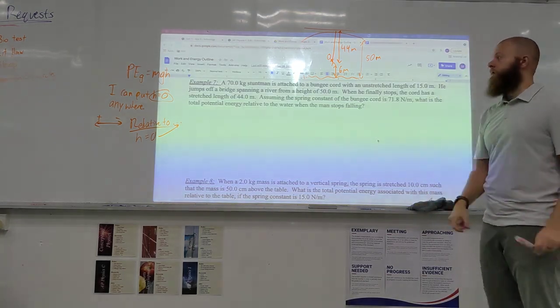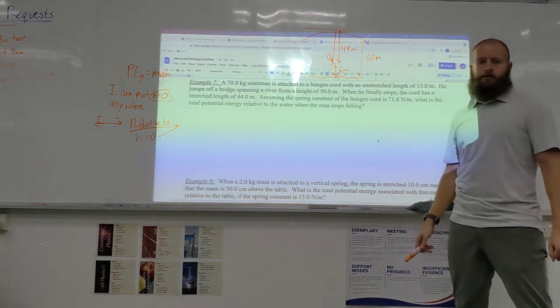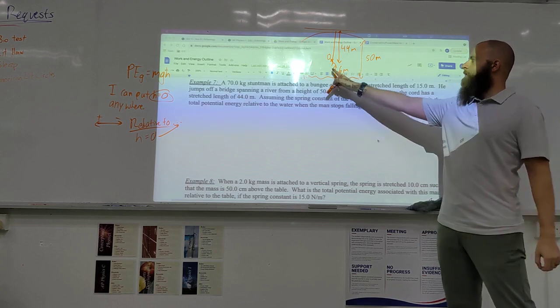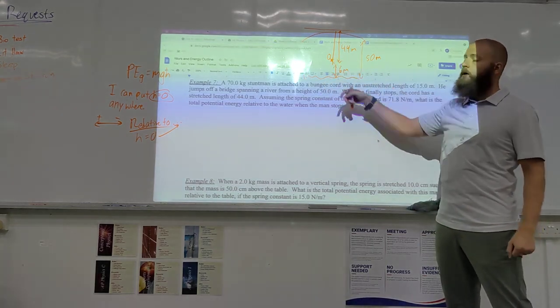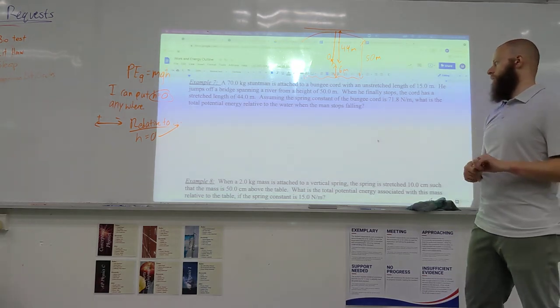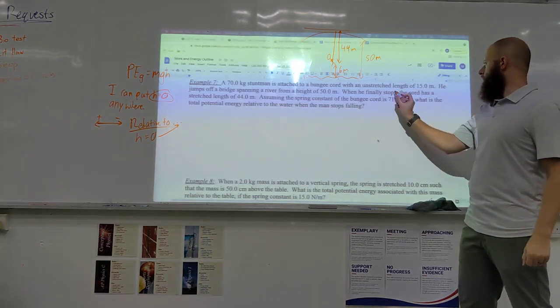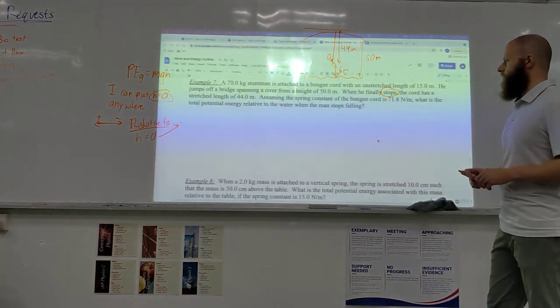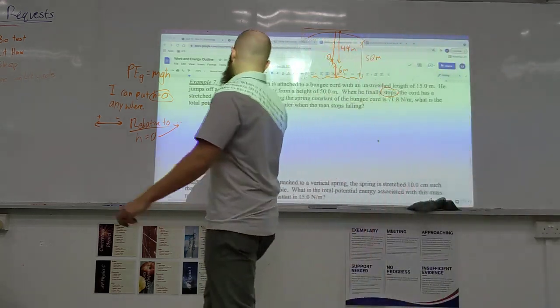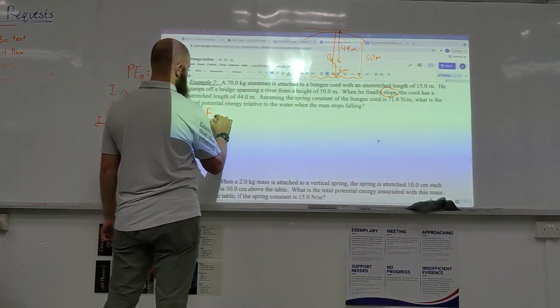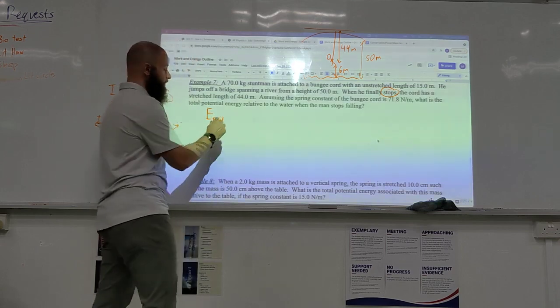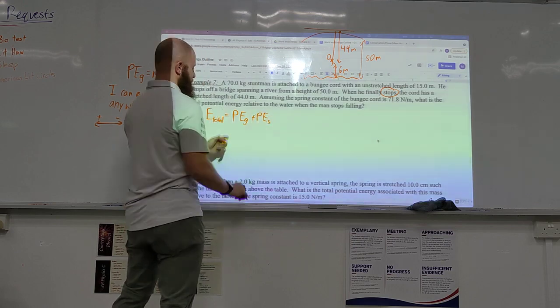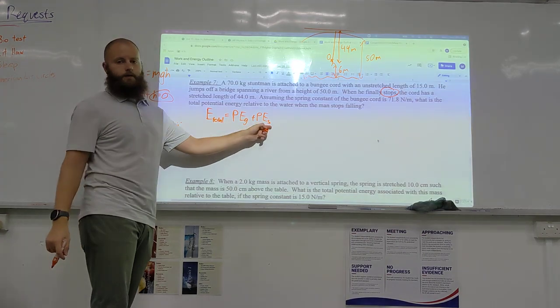Now, what are the two types of energy that he will have at this point? Yeah, he has that spring potential energy, because we have this bungee cord, but he also has what else? He also is above the ground, so he will also have gravitational potential energy. Mental note, he stops, so does he have kinetic energy? No, he won't have kinetic energy in this situation.